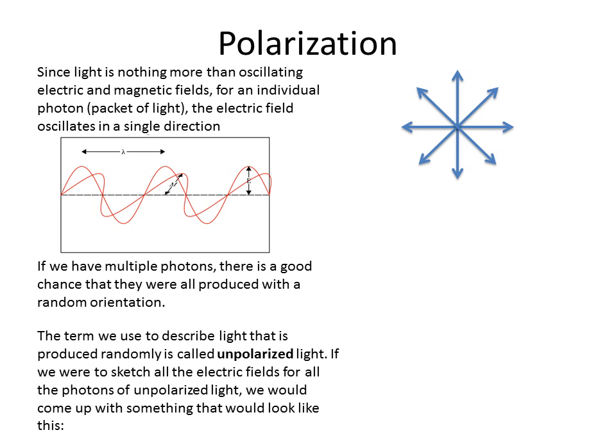Unpolarized light sometimes you'll see a picture that has a bunch of arrows in all the directions. It just means that the electric field for some photons are oscillating in this direction, some photons are oscillating in this direction, some photons are oscillating with their electric fields in this direction. All the photons however, will be traveling in the same direction in this case.